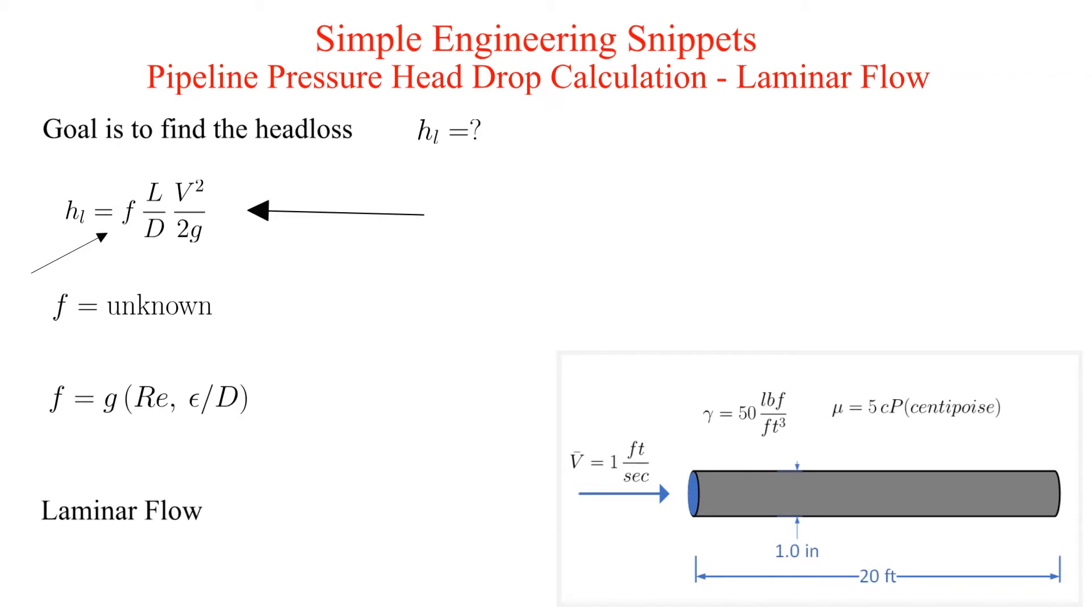However, in the case of laminar flow in a circular pipe, the friction factor can be calculated with the equation 64 divided by the Reynolds number. Care should be taken. This expression is only valid for circular ducts.